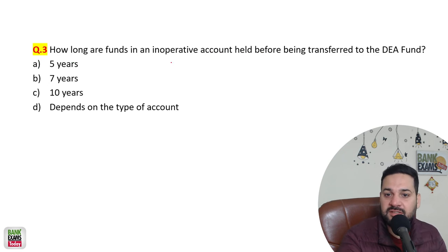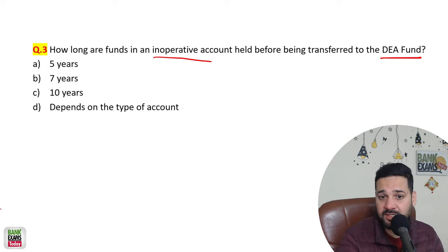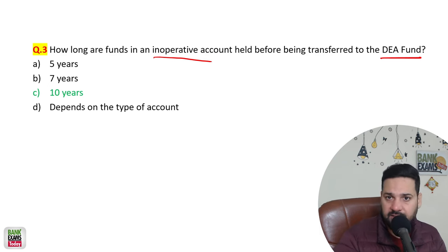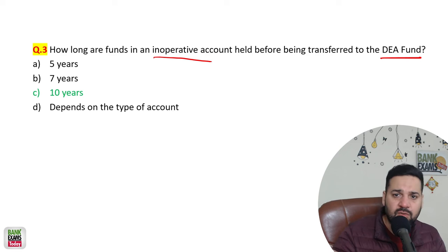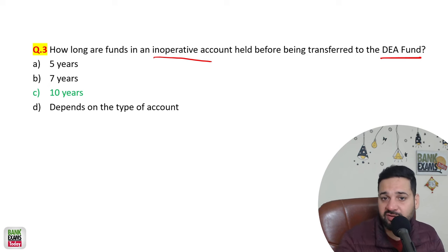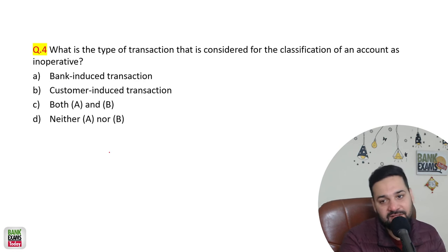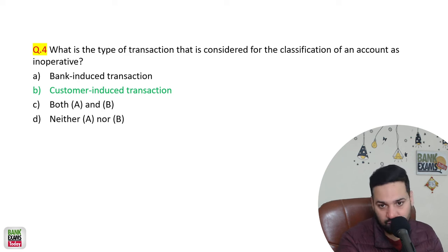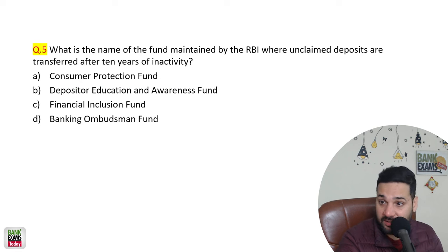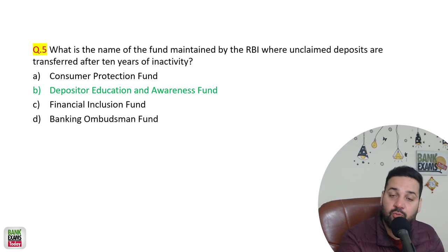How long are the funds in an inoperative account held before transfer to the Depositor Education and Awareness (DEA) Fund? For 10 years — if an account is inoperative for 10 years, the bank transfers the money to the DEA Fund. According to the circular, the bank needs to make efforts to reach the customer or their legal heirs — send letters, SMS, email — and try to contact the account holder. The type of transaction considered for classifying an account as inoperative is customer-induced transaction. The fund maintained by RBI where unclaimed deposits are transferred after 10 years of inactivity is the Depositor Education and Awareness Fund.